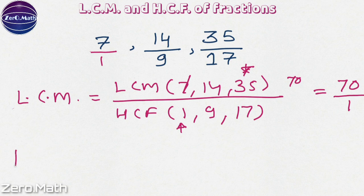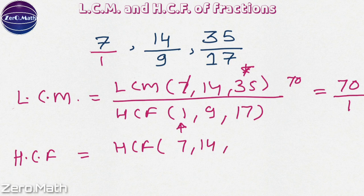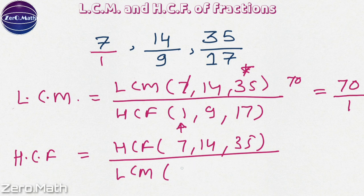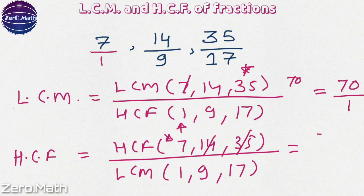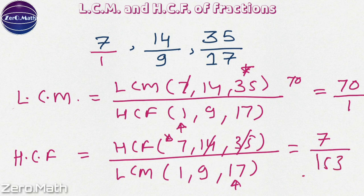Now let us figure out the HCF of the given fractions. It will be the HCF of the numerators — that is 7, 14 and 35 — over the LCM of the denominators — that is 1, 9 and 17. To figure out the HCF of the numerators, find the lowest number, that is 7. You can see 7 is a factor of 14. Yes. It is a factor of 35. Hence, the HCF is going to be 7. For the LCM of the denominators, we have 17 which is a prime number. Multiply it by the other number, 9. So 17 into 9 is 153. Hence, the HCF of the given fractions is 7 over 153.